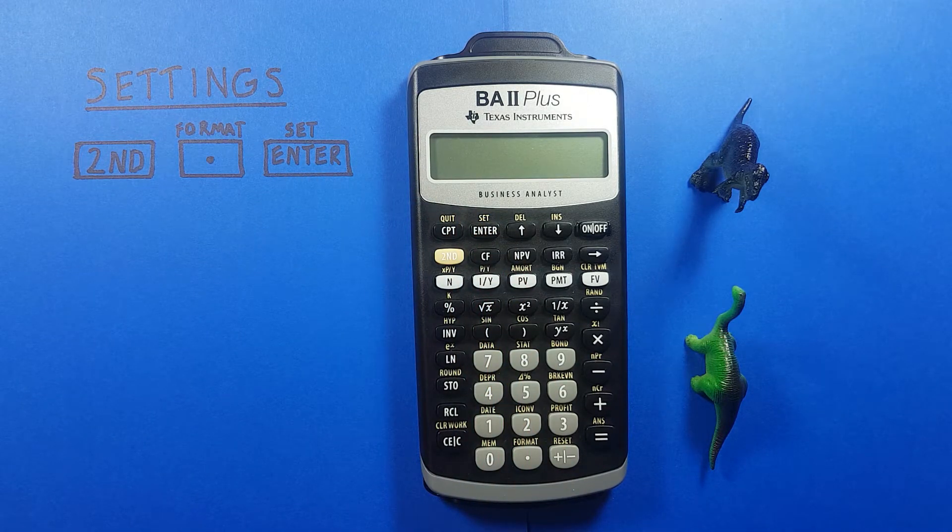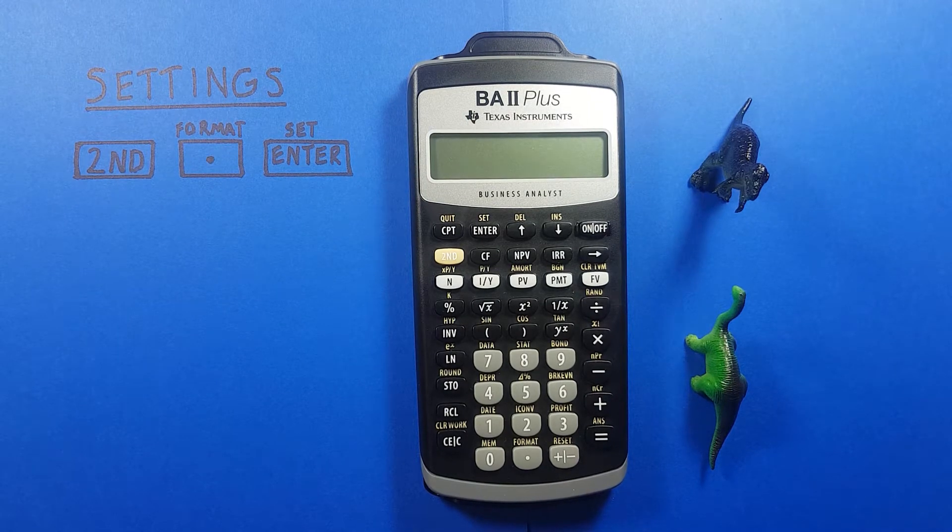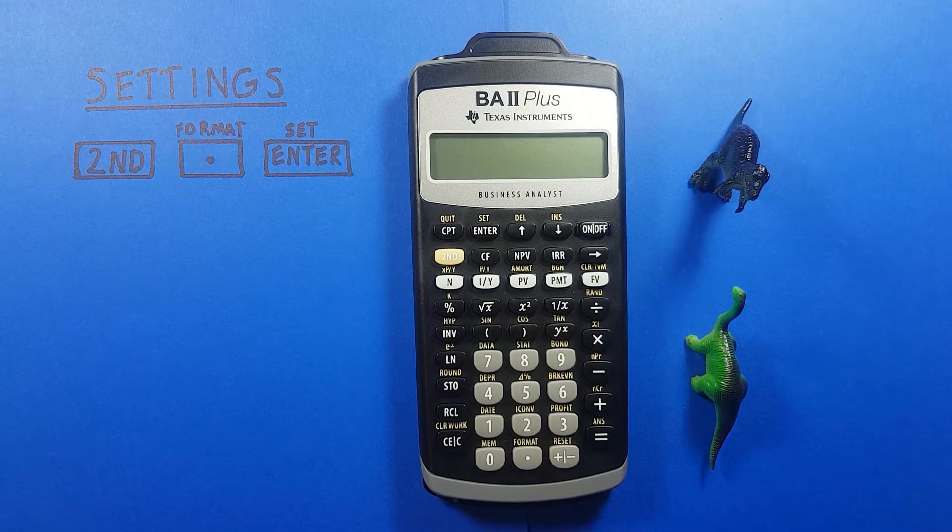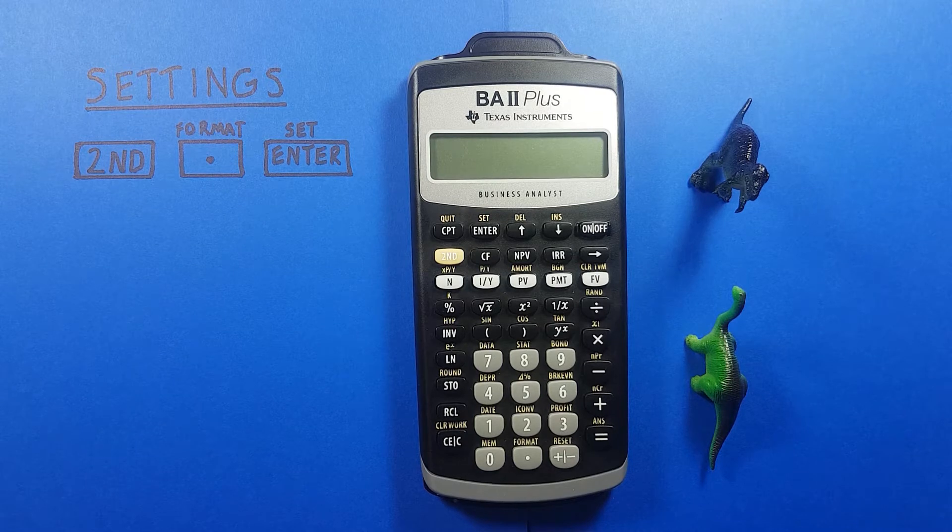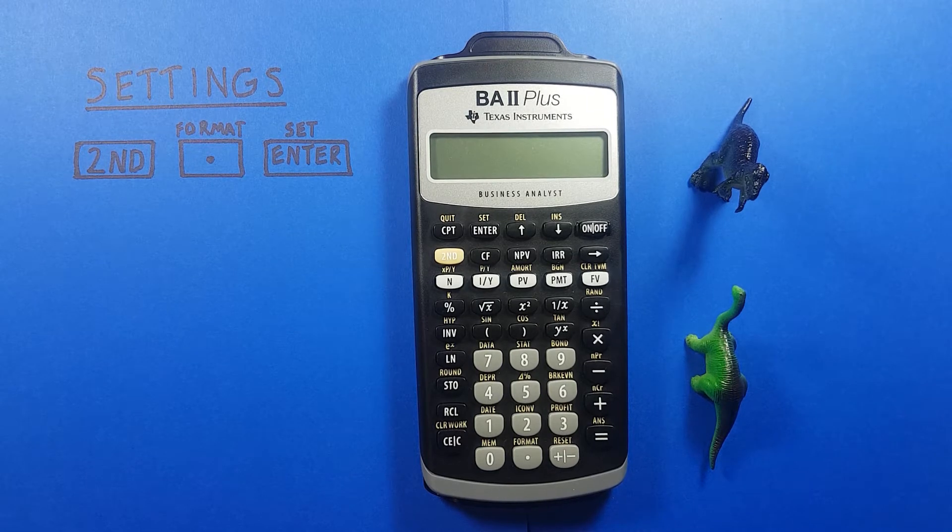The settings we can change include the number of decimal places, the angle units, the date format, the number separators, and the calculation method.